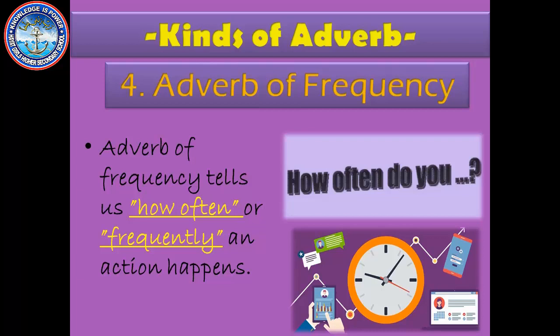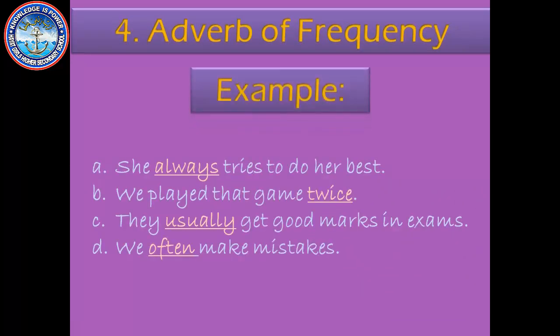Last but not the least, adverb of frequency. Adverb of frequency tells us how often or how frequently an action happens — that is, how many times an action happens. For example, 'She always tries to do her best.' How often does she try? Always. So 'always' is an adverb of frequency. Second example: 'We played that game twice.' How many times? Twice — two times. So 'twice' is an adverb of frequency.